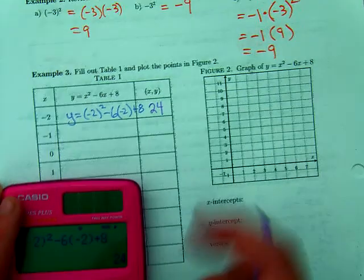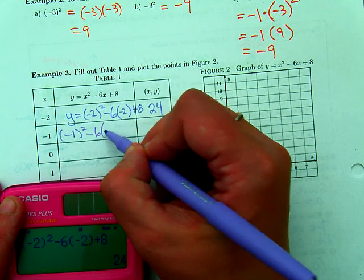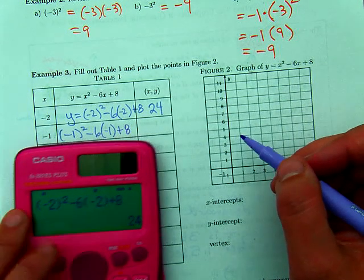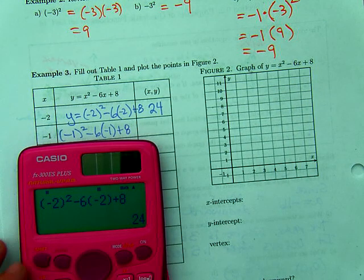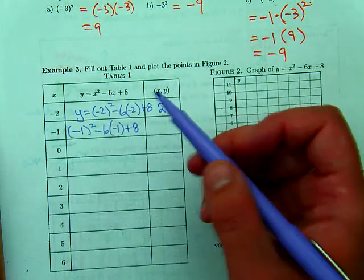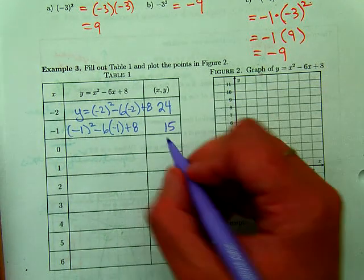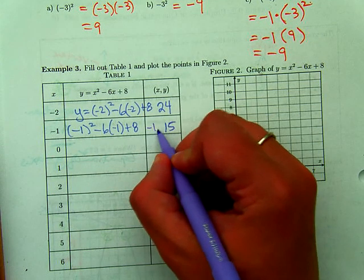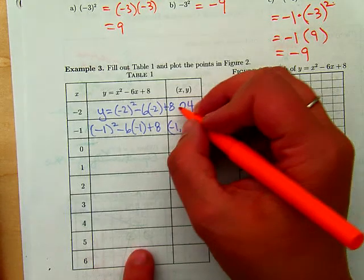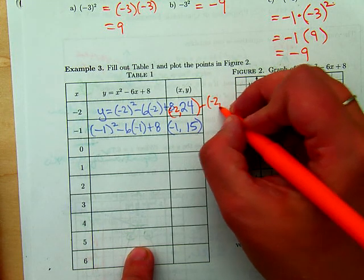And then we're going to plug in negative one. We have negative one squared minus six times negative one plus eight. Negative one squared is one plus six, seven plus eight, 15. Actually, I was supposed to do an ordered pair here. So we have negative two, 24 and negative one, 15. This is negative two, 24.